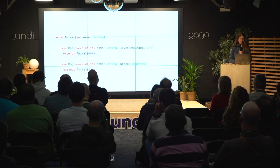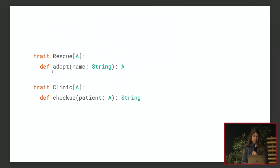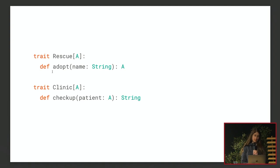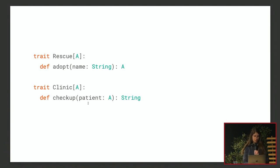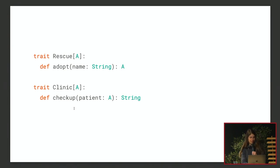We'll look at two type classes: Rescue, which has an adopt method that takes a name and returns an A, and Clinic, where you bring a patient of type A and get back an examination report as a string. I should mention that Daniel from Rock the JVM has a YouTube video using a very similar example to explain contravariance — if you're still confused after this talk, check it out.